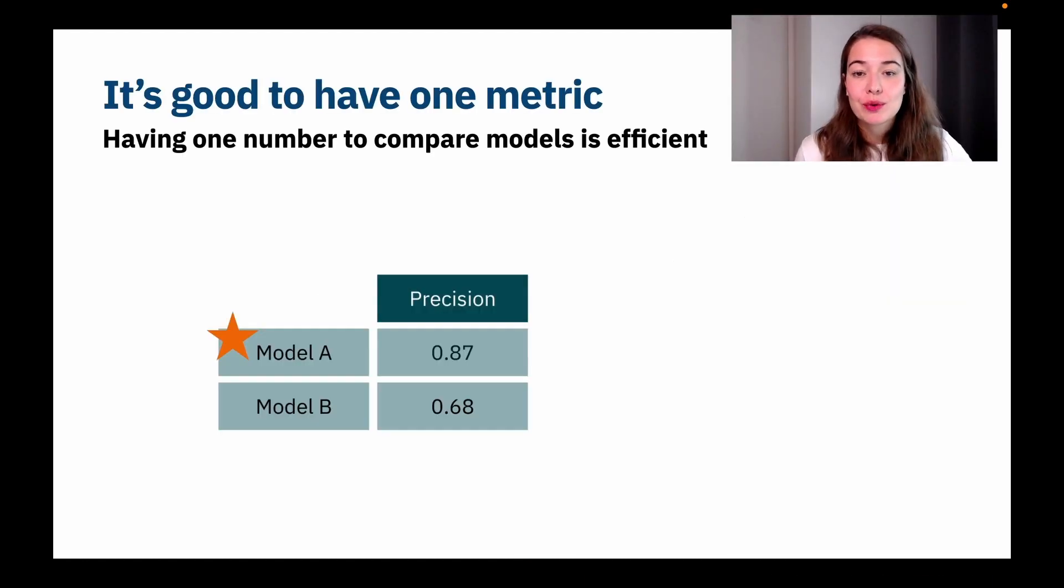So the first thing that we need to know is that it's very good to have one metric when you're comparing your models, because you're going to have different models and you're going to have to see how they perform compared to each other to be able to choose the best one. It could be using different hyperparameter settings or different architectures and seeing which one fits the problem better. So if you are only using precision, for example, it's quite simple, you're just going to choose the one that has a higher precision. So it will be model A.